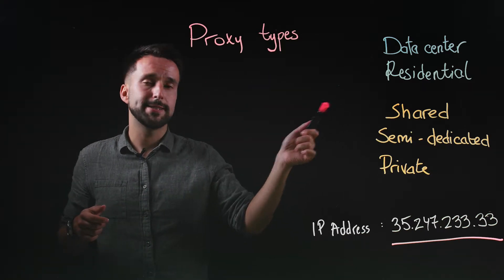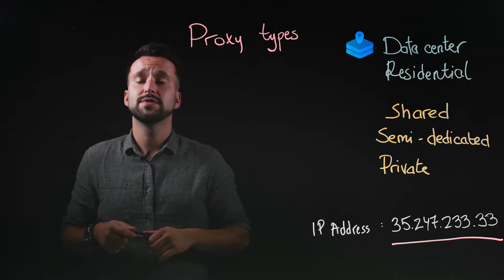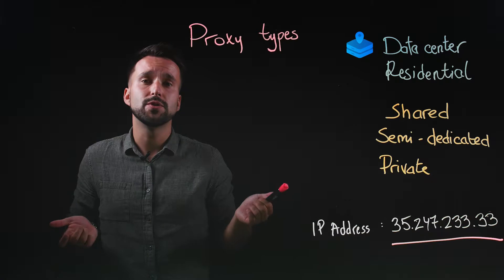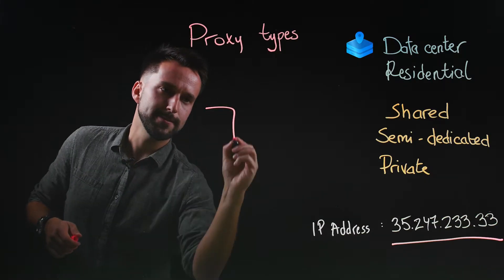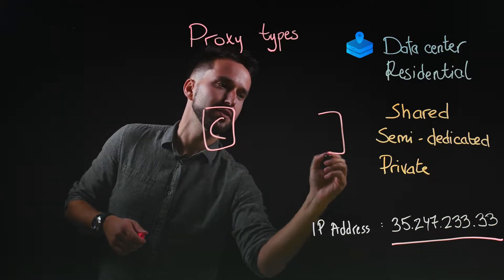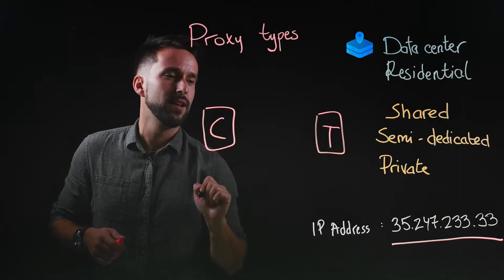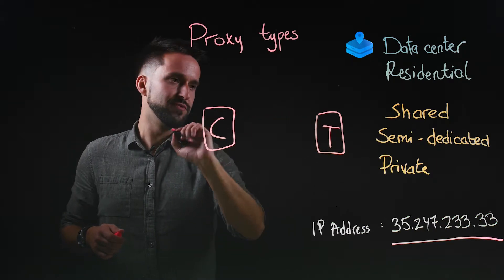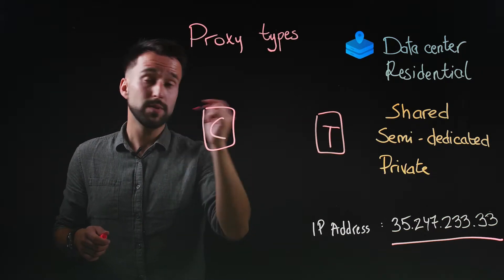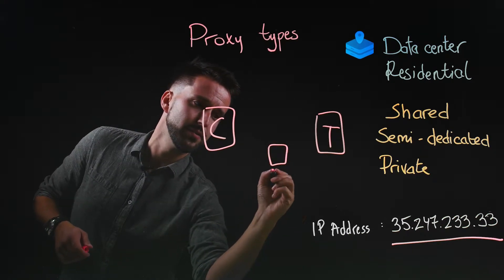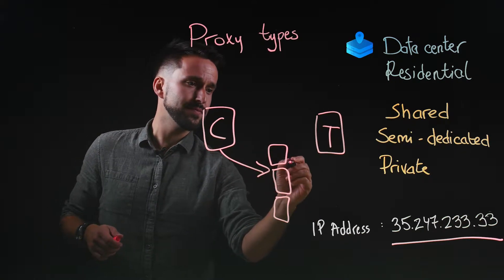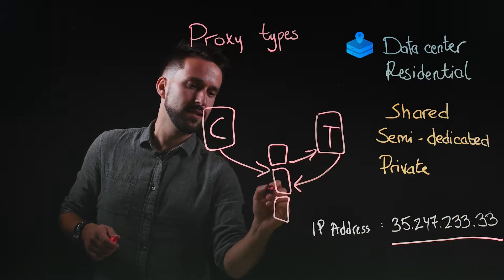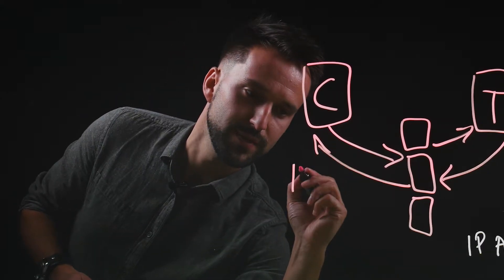Let's start off with datacenter proxies. Datacenter proxies are artificial — they are stored in data centers all around the world. They're actually hugely popular among businesses that practice web scraping. So if you're a client and you have a target of choice — a data source, a website — instead of connecting to it directly and showing your IP address, you would employ proxies. Proxies sit somewhere in the middle; they carry their own IP address so you reroute through them.